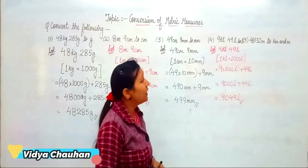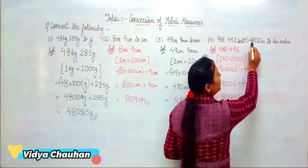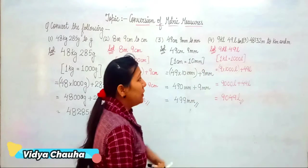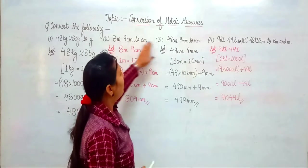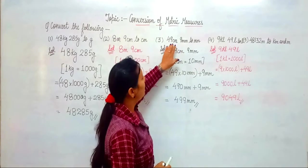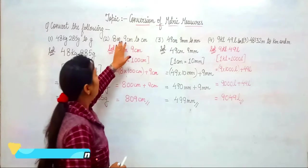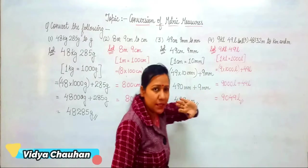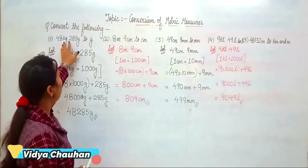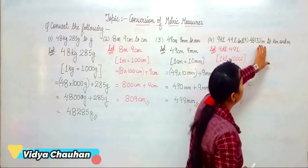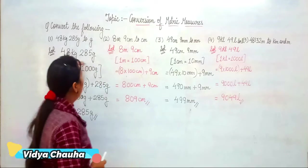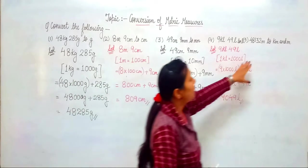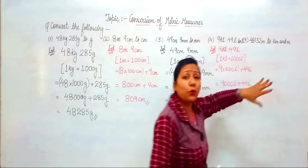Coming to the fifth part: convert 48,132 meters to kilometers and meters. This fifth part is the opposite of what we did earlier — the values are given in meters and we have to express them in kilometers and meters. In the previous four parts we converted a higher unit to a smaller unit by multiplying by 10, 100, or 1,000. Here, since we are converting a smaller unit to a higher unit, we are going to divide.